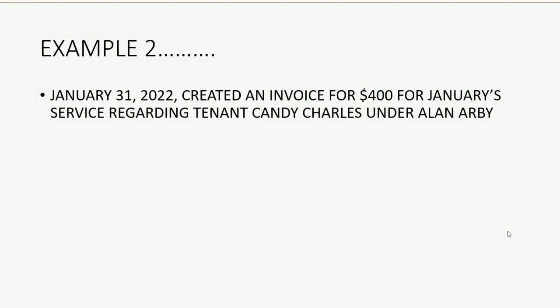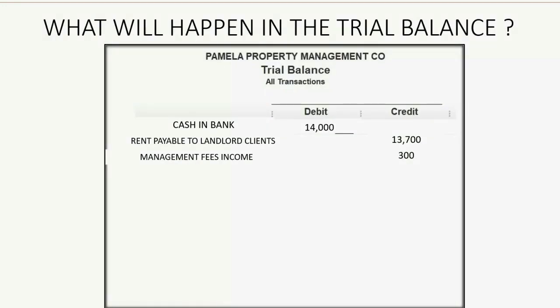Let's do a second example. Still on January 31, let's do Candy Charles. Her rent was $4,000, so the amount that we keep from her rent would be $400. If we send an invoice declaring that we earned income for Alan as a result of Candy Charles, we earned $400 more in income, so management fees income should increase. However, we owe the landlord $400 less in remittance because we just earned the service fee and we're going to take it out of what we pay back.